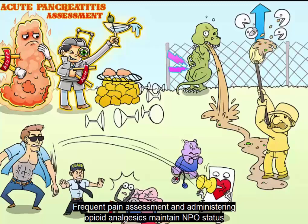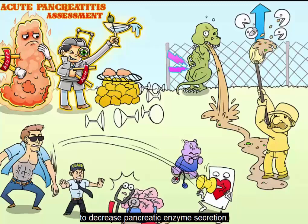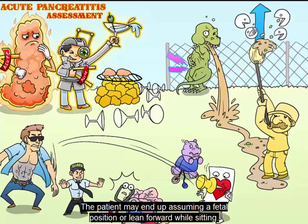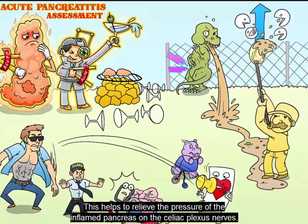Frequent pain assessment and administering opioid analgesics. Maintain NPO status to decrease pancreatic enzyme secretion. The abdominal pain might be in the mid-epigastric area radiating to the back or the flank, and can also radiate to the left upper quadrant. The patient may assume a fetal position or lean forward while sitting, which helps to relieve pressure of the inflamed pancreas on the celiac plexus nerves.